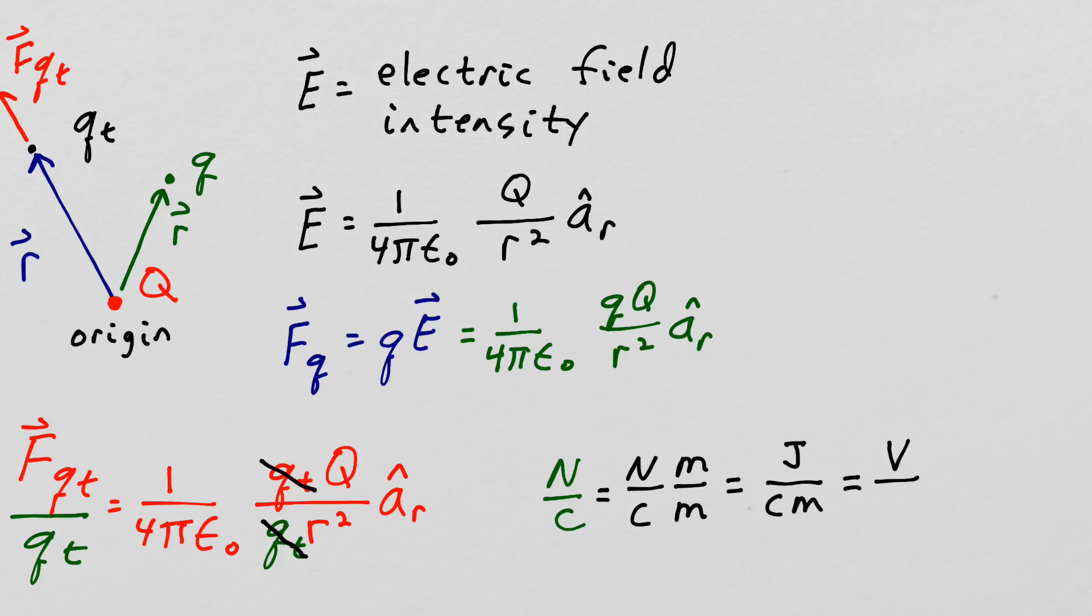So a newton per coulomb is the same as a volt per meter, and volts per meter is the more common unit for the electric field intensity.